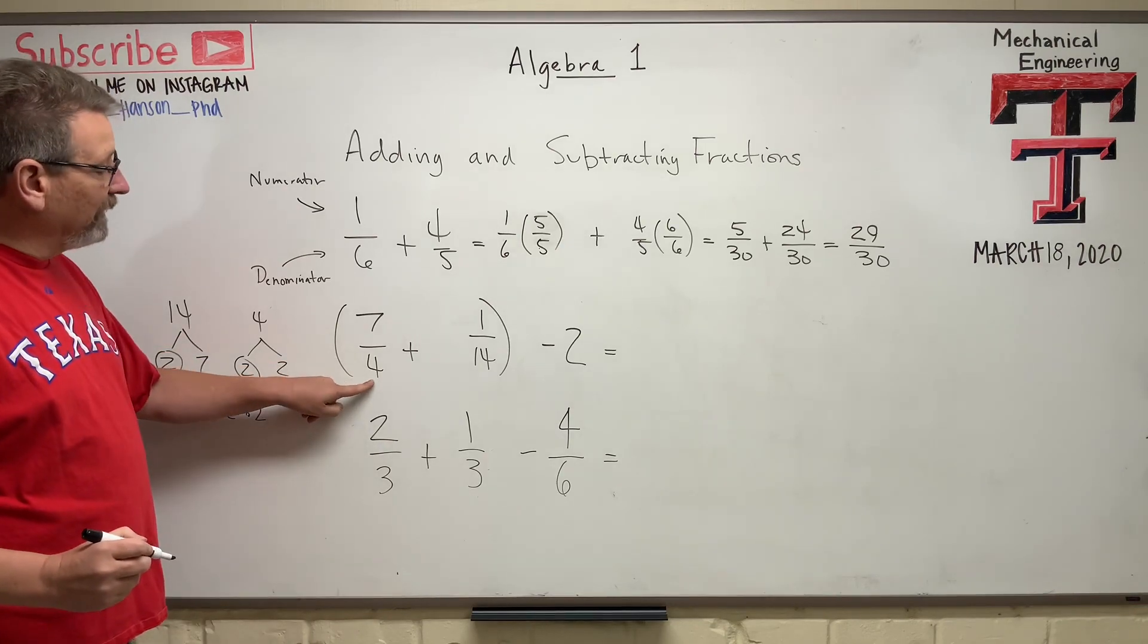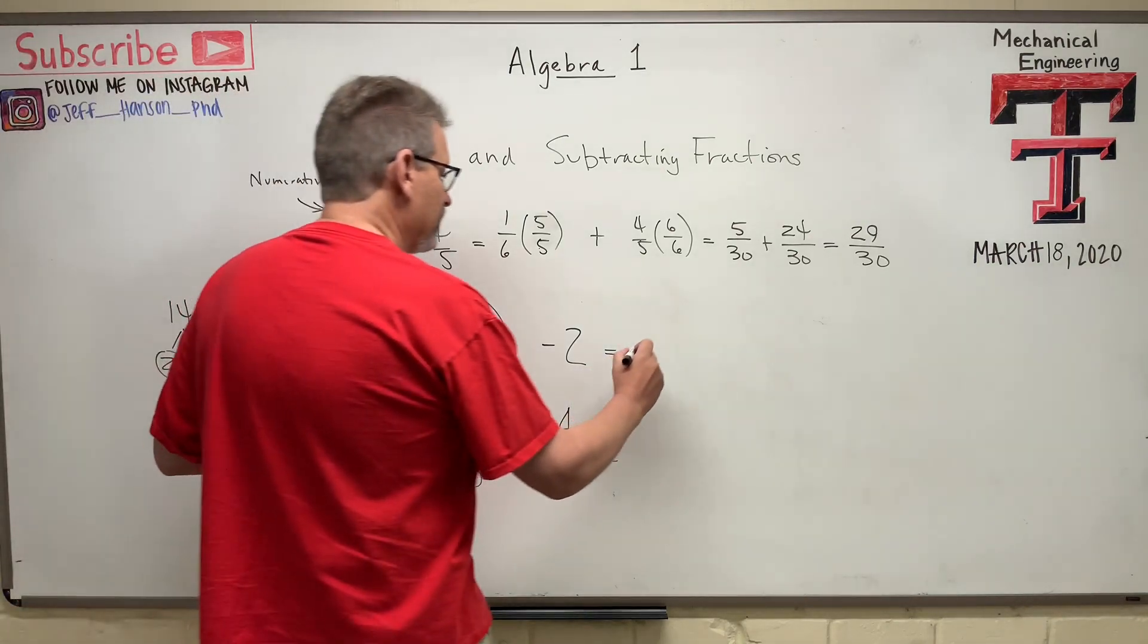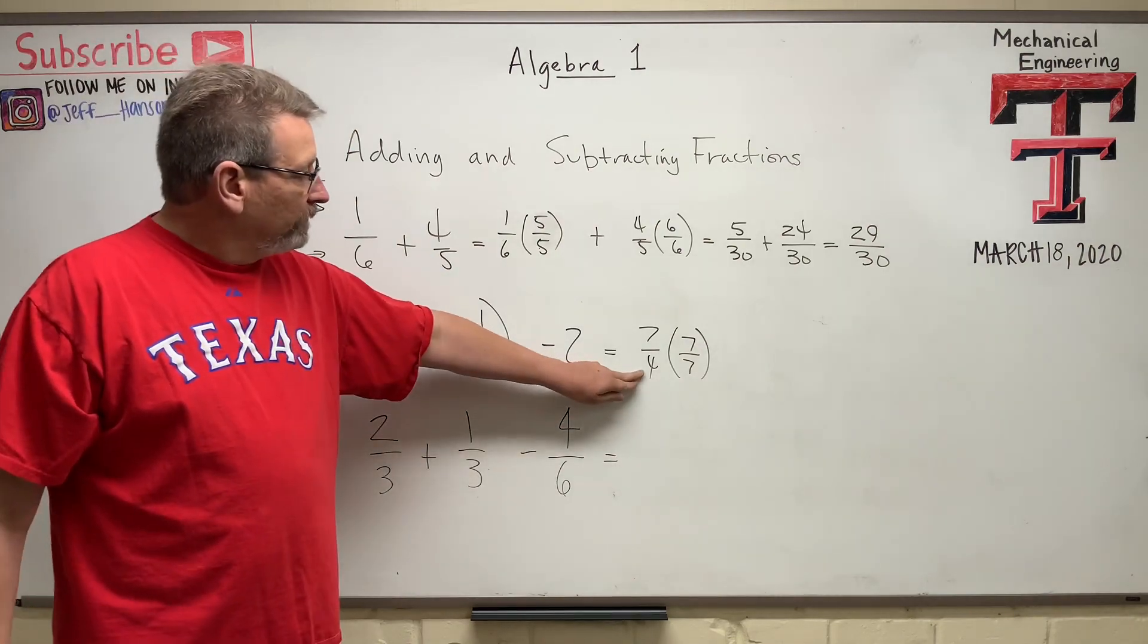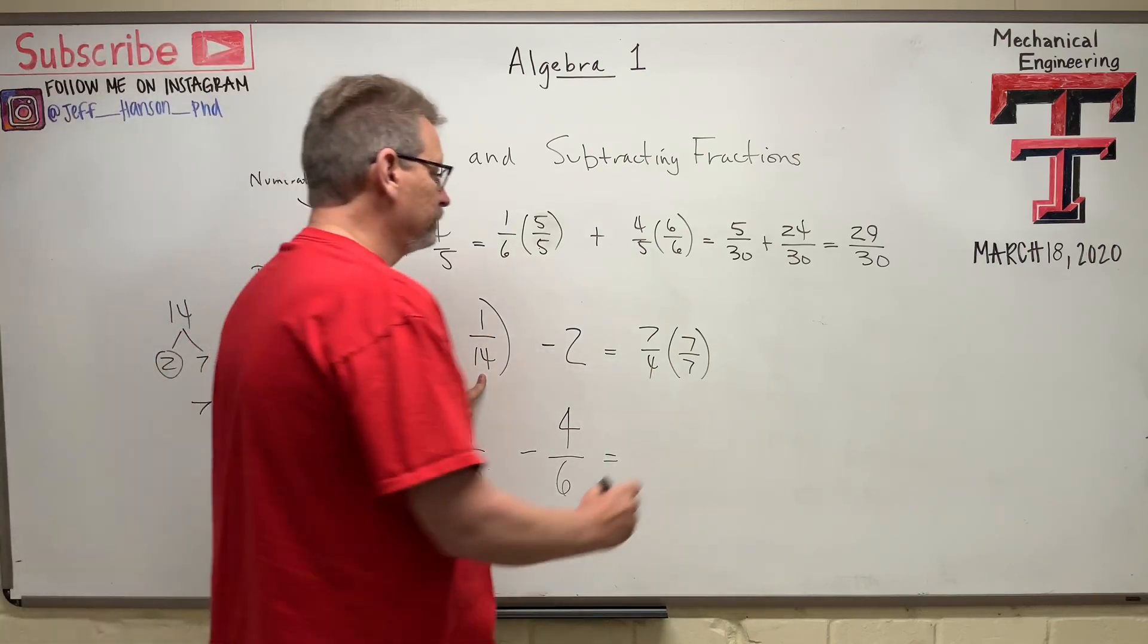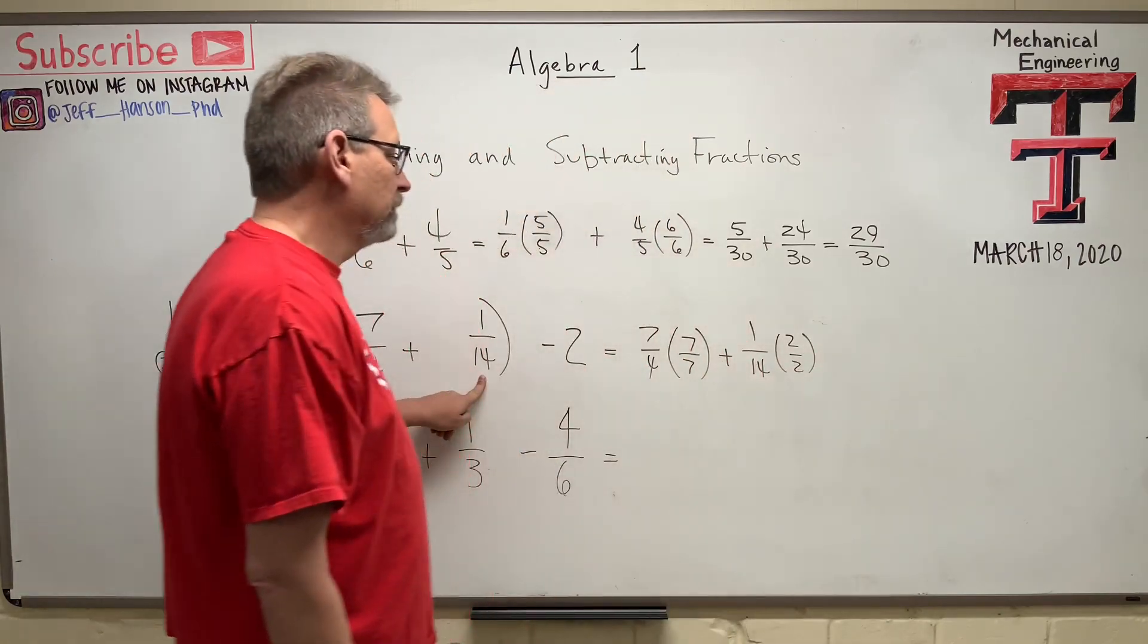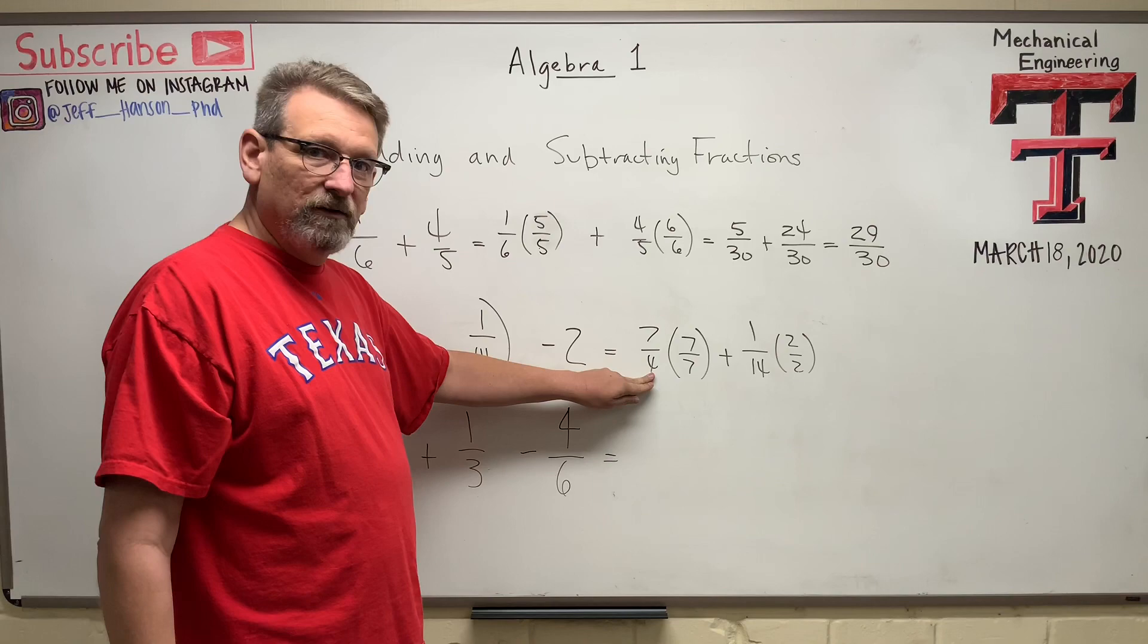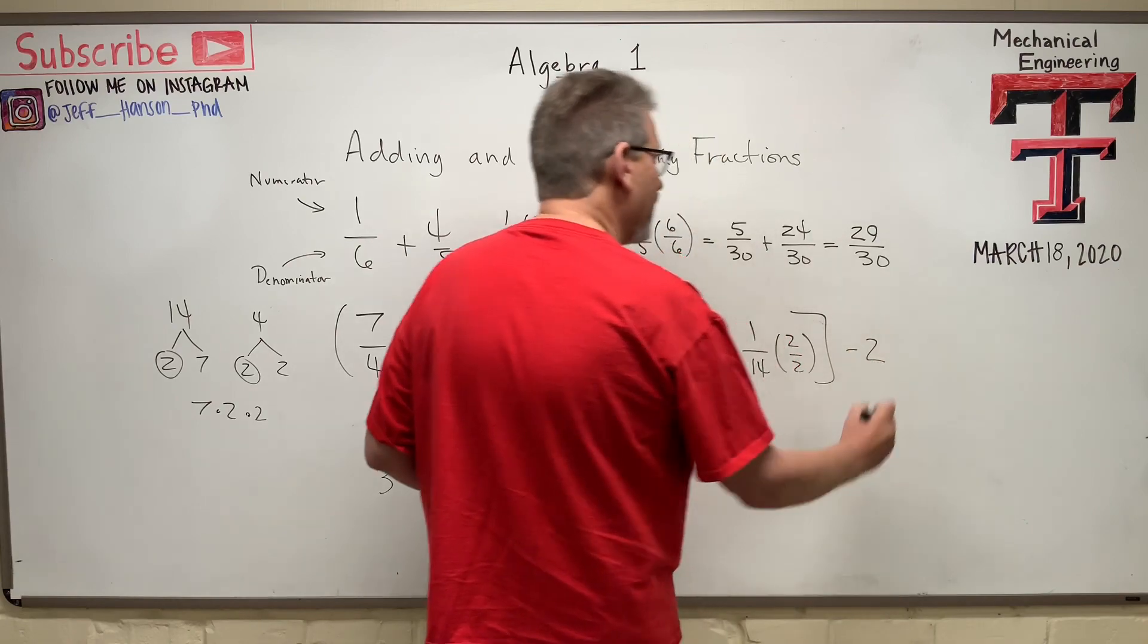So I want you into a 28. So that guy is going to be, let's see, 28 times 4. How about 7? 7 times 4 is 28. So 7 over 4, multiplied by 7 over 7. 4 times 7 is 28. And I just multiplied it by 1. Plus 1 over 14, which I'm going to multiply by 2 over 2. And how do you know? Well, look at the bottom. 14 times 2 is 28. 7 times 4 is 28. So I've got this part, and then when I get through, I need to subtract 2 away from it.